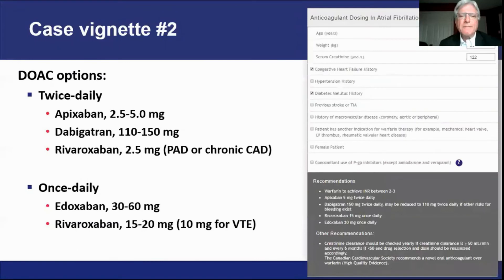We're changing patients from warfarin to a DOAC who typically have atrial fibrillation — the dominant indication — or venous thromboembolism. Importantly, we do not make this switch for a patient with a mechanical heart valve, whether aortic or mitral. Thrombosis Canada has a dosing tool for patients with atrial fibrillation that will provide dosing options and the actual dose for each DOAC according to patient characteristics.